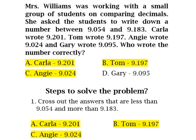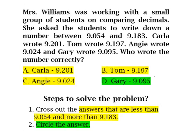The answer choice that's left is D, Gary, 9.095. So we will circle our answer choice D, Gary, whose answer choice is 9.095.